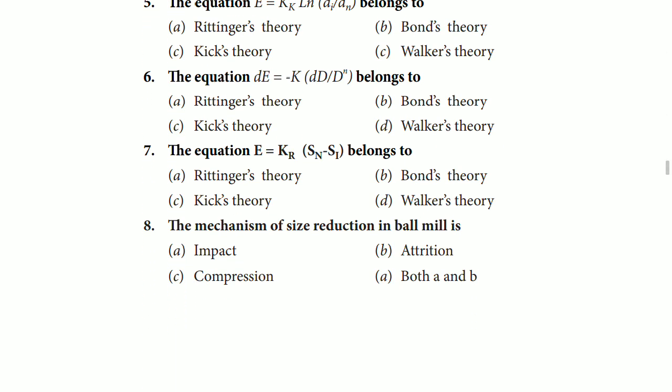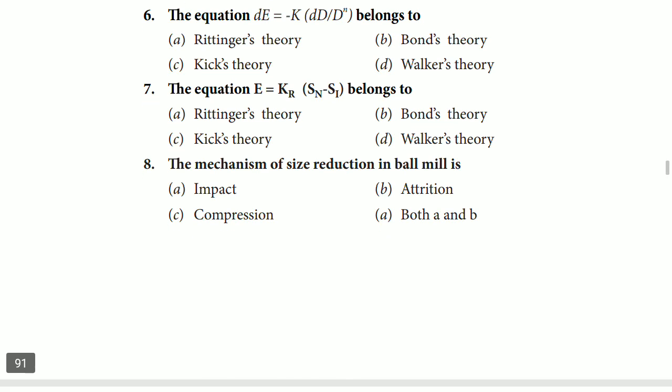Moving towards the next question, question number 6: the equation dE = -K_D dD/D^n belongs to the correct answer is Rittinger's theory. Next question is question number 7: the equation E = K_R(S_n - S_i) belongs to, correct answer is Rittinger's theory option.